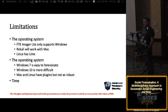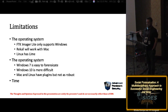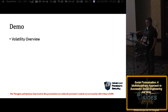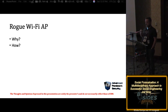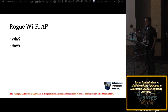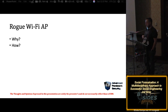FTK Imager only supports Windows. You can use Rekall — a fork of volatility with a bit more capability, maintained by Google — which works with Mac. For Linux you can use LiME. Windows 10 is very hard to collect memory artifacts from; Windows 7 is way easier. The amount of time you'll spend on this will be tremendous, and if you're in a consulting role, you may not have the billable hours. There are Mac and Linux plugins but they're just not as robust. With 10 minutes left, I'm going to move through the rogue Wi-Fi access point.